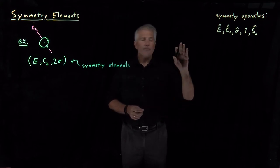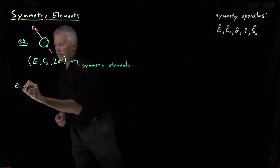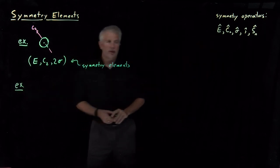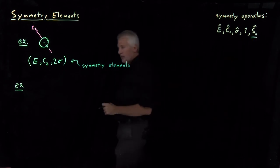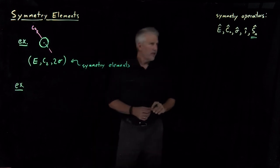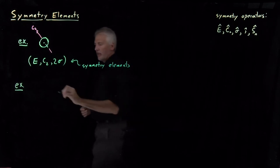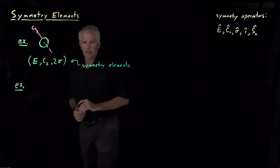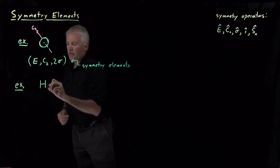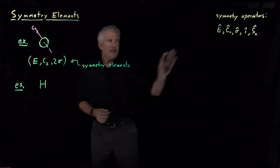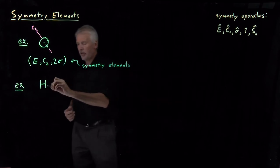Let's do one more example. None of the examples we've worked so far have shown a very good example of an improper rotation, and even this next example won't have a great one — we don't have any capital letters that provide terribly good examples of that. But let's work one more example to get used to applying these symmetry operators to objects. Let's consider a capital letter H.